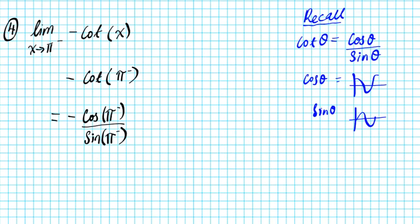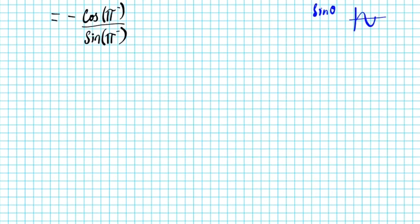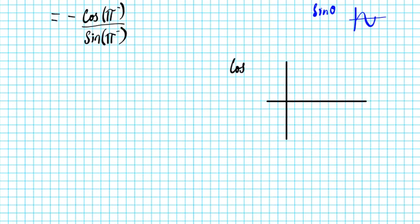Now we're going to use the graphs to answer the question. Let's sketch the cosine graph — it oscillates between one and negative one. We mark pi over two, pi, and three pi over two on the axis. This is where pi is located on the cosine graph.